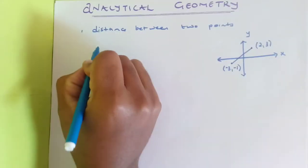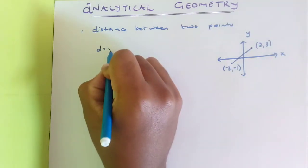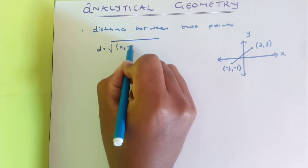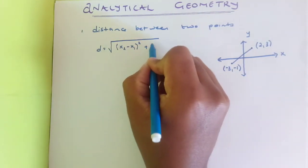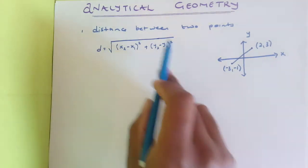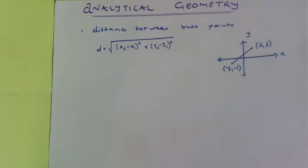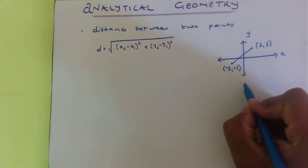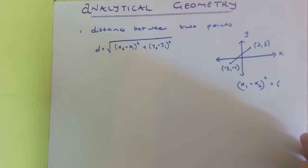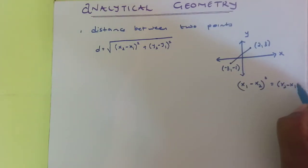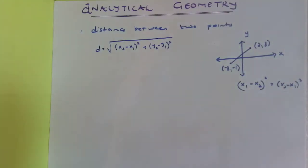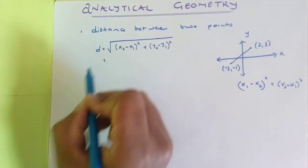The distance formula is: d = √[(x₂ - x₁)² + (y₂ - y₁)²]. Note that (x₁ - x₂)² equals (x₂ - x₁)², because squaring removes the negative sign, so both forms give the same result.